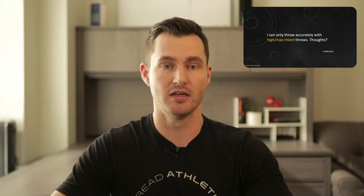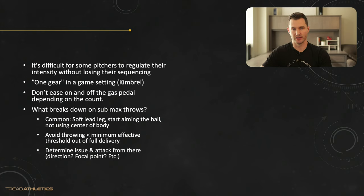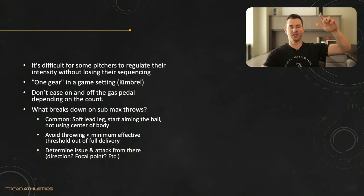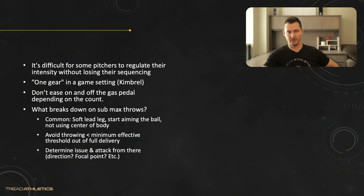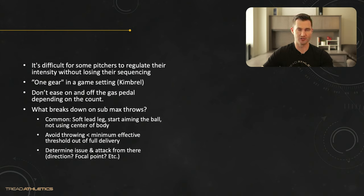Next question: I can only throw accurately with high or max intent throws. This is a pretty common issue — something I definitely struggled with at various points in my career. It's difficult for some pitchers to regulate intensity without losing their sequencing. They have trouble going up and down — they can't go max effort fastball, BP fastball, max effort fastball in sequence. They don't have that fine-tuned feel that some pitchers do.